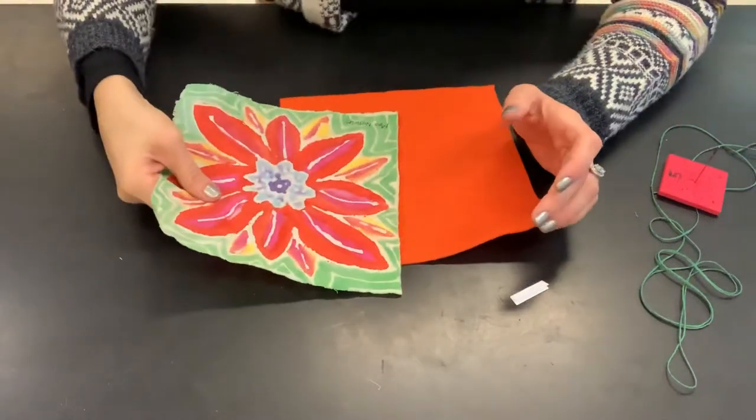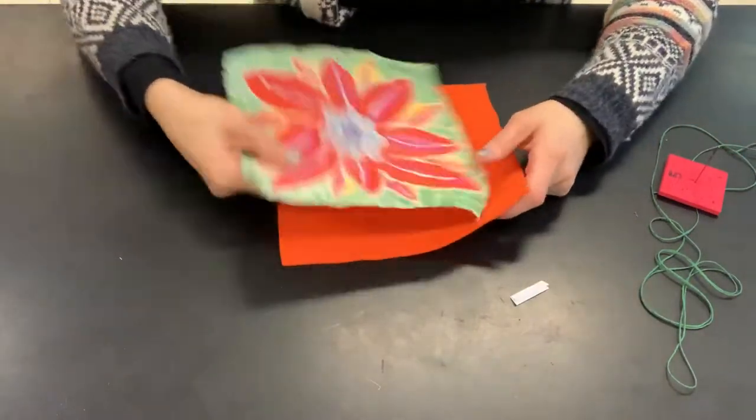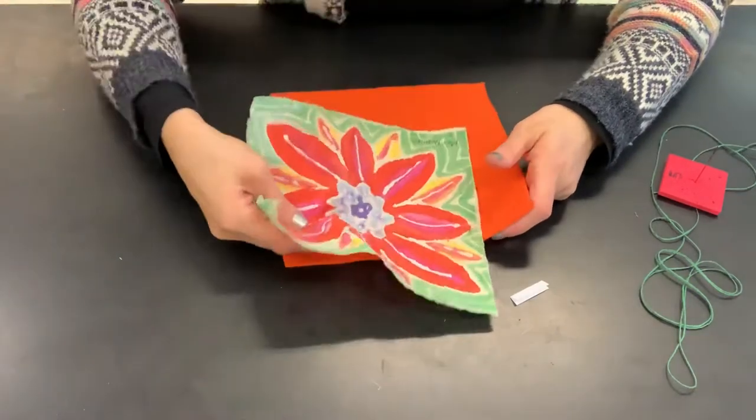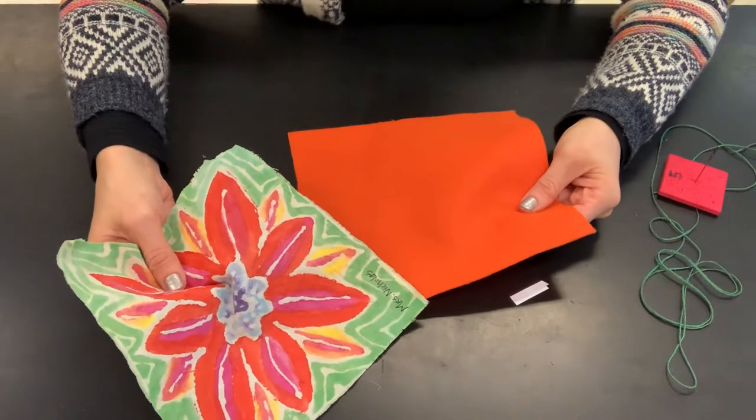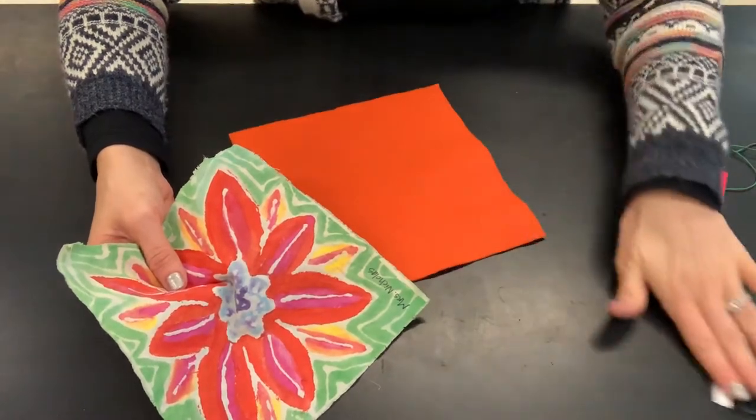Okay boys and girls, we are now ready to begin sewing together our pillows. So I have my fabric and I selected a piece of felt that I want as the back of my pillow. So I'm going to sew these two pieces together.